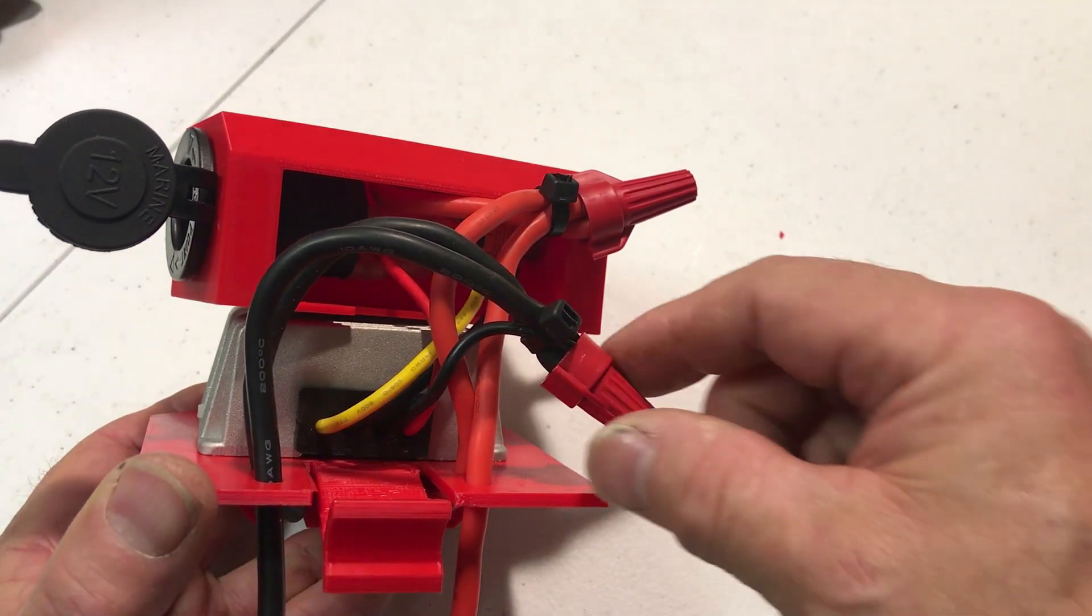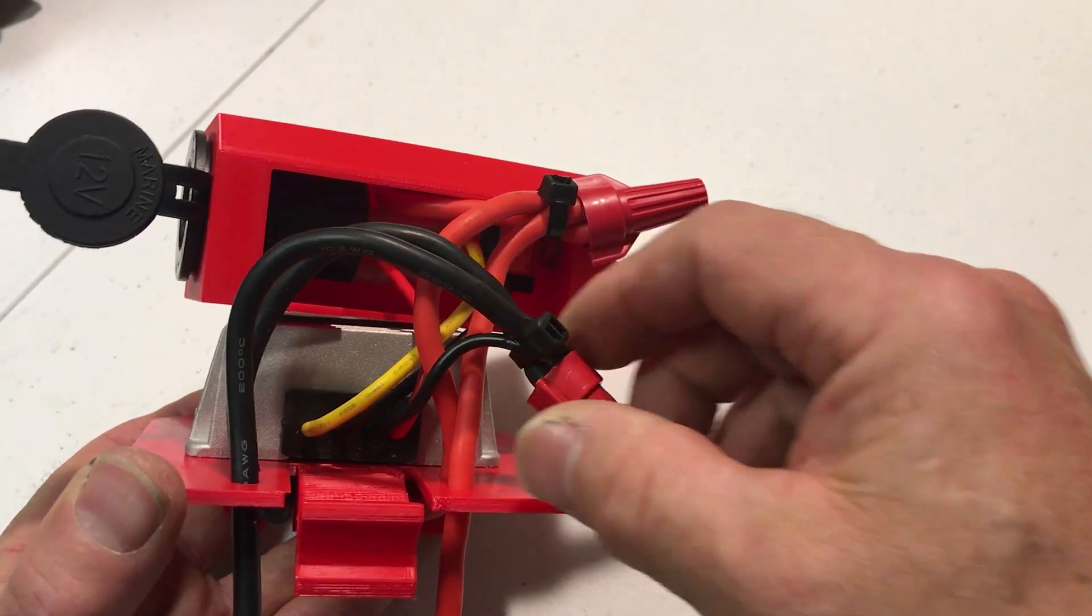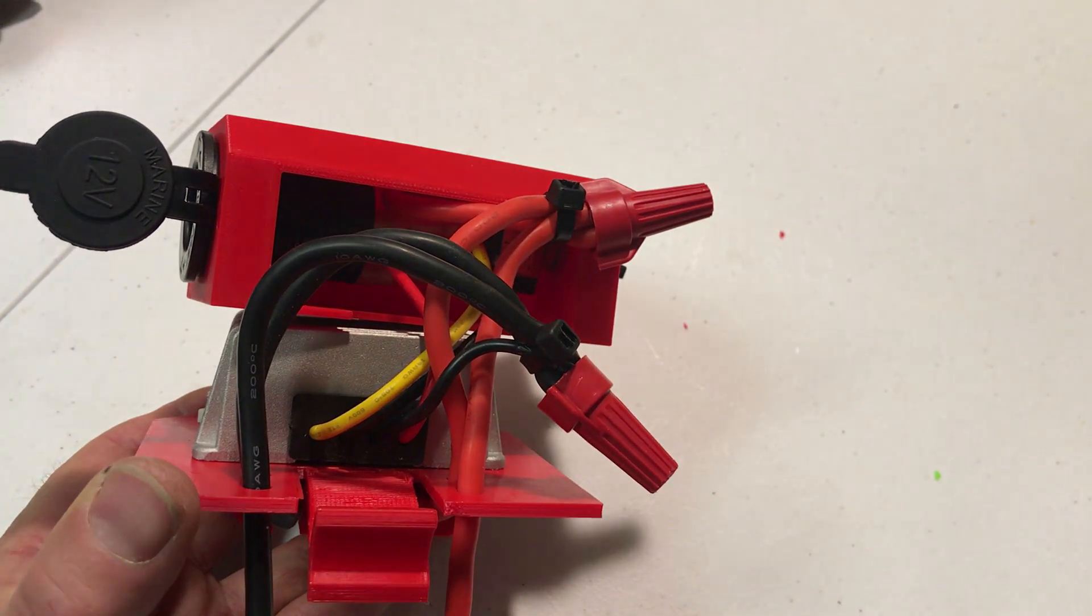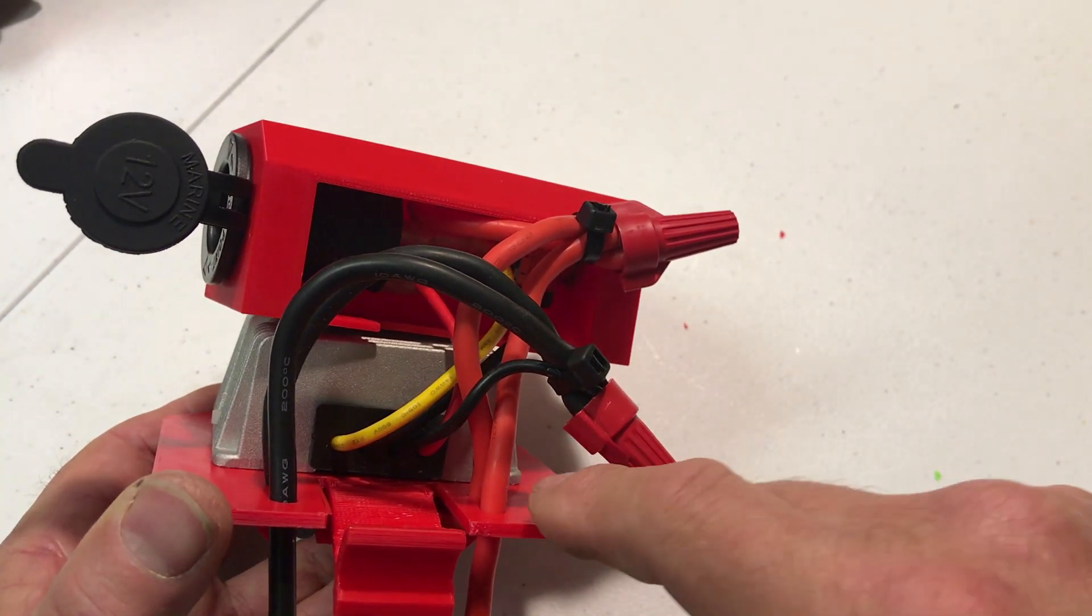So now I have the wires with wire nuts on them and I put some zip ties around to make sure that they don't pull loose. And next we just have to shove all the wires in and glue the cover on.